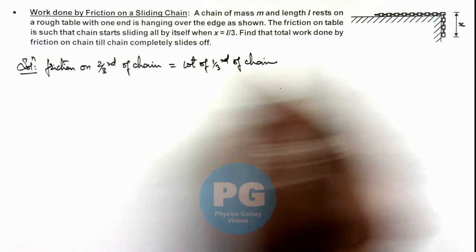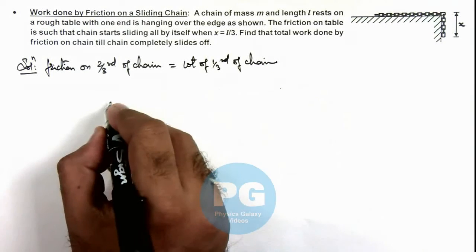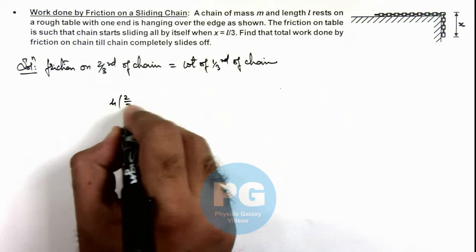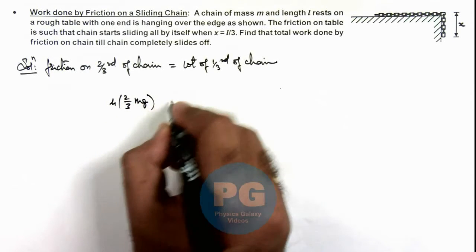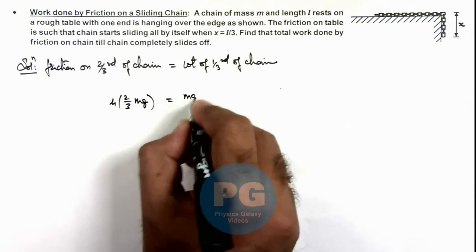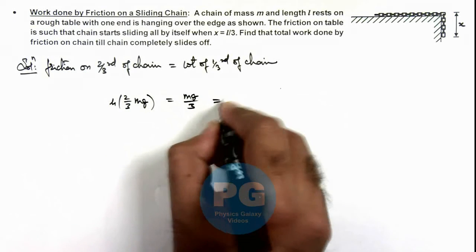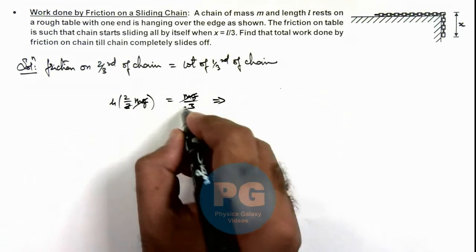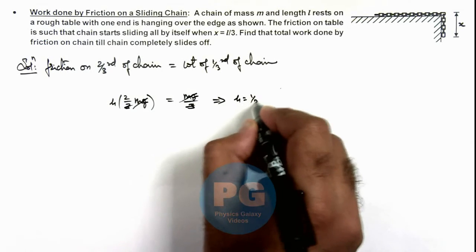So we can write friction on this two thirds part of chain will be μ multiplied by 2/3 mg, and this balances mg/3. On simplifying, mg gets cancelled out and the value of μ we are getting is 1/2.